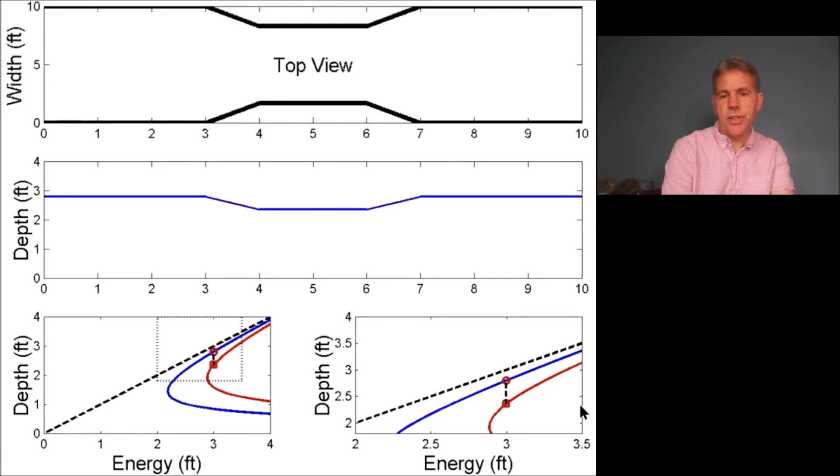This is basically the transition that the flow undergoes as it enters the constriction, as it shifts from the blue EY diagram to the red EY diagram. Since energy is being conserved, the shift is just simply vertical.